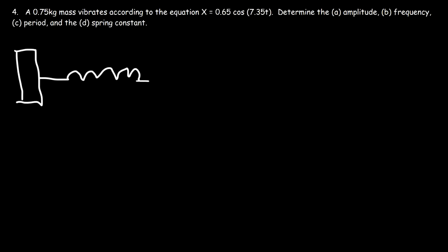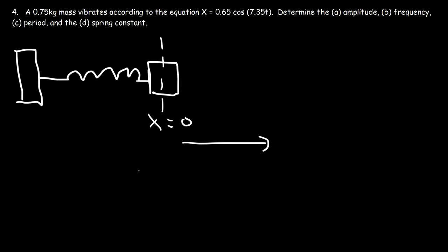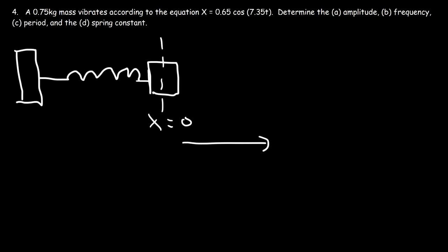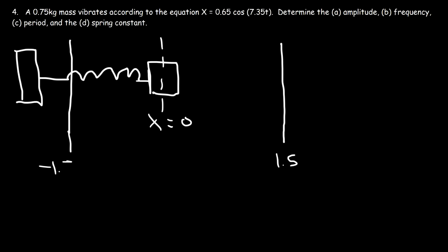Let's say the oscillator is at equilibrium — position x equals 0. It can oscillate in both directions, so x could be positive or negative. The amplitude is the maximum displacement for the spring. For example, if the most the spring stretches is 1.5, then the amplitude — the maximum x value — is 1.5, and x can be anywhere between negative 1.5 and positive 1.5. So x represents the current displacement, while A, the amplitude, is the maximum displacement.